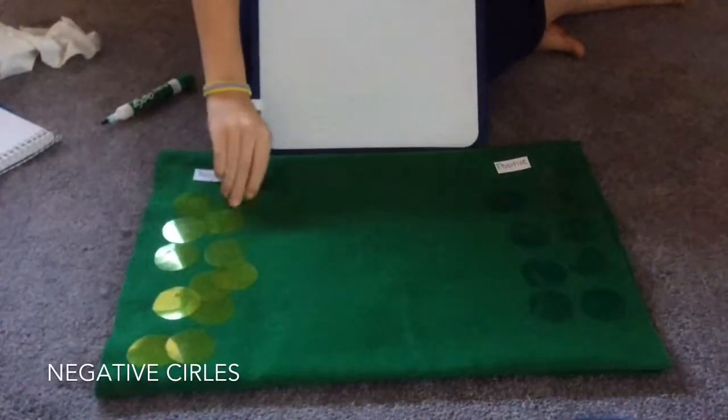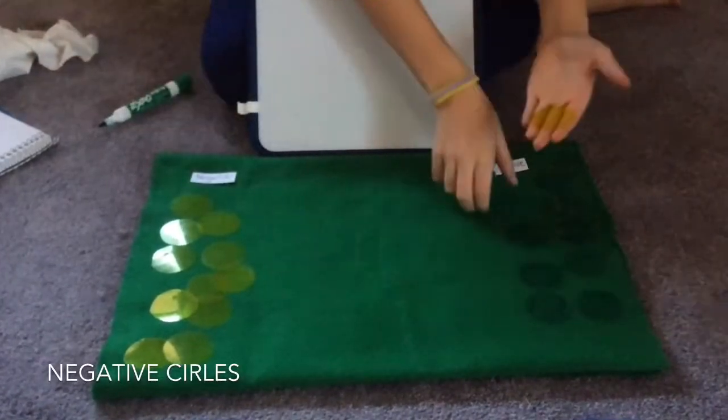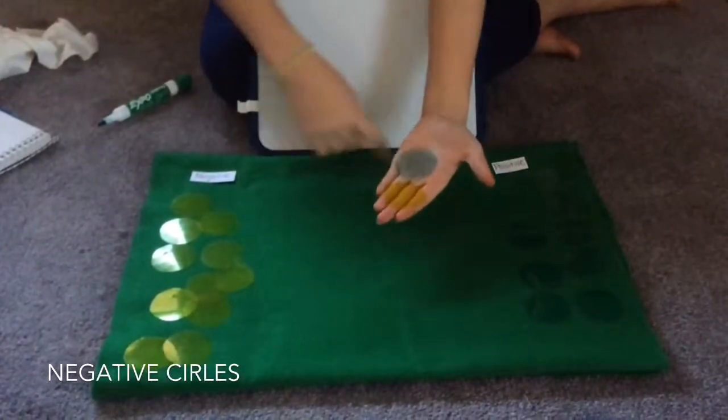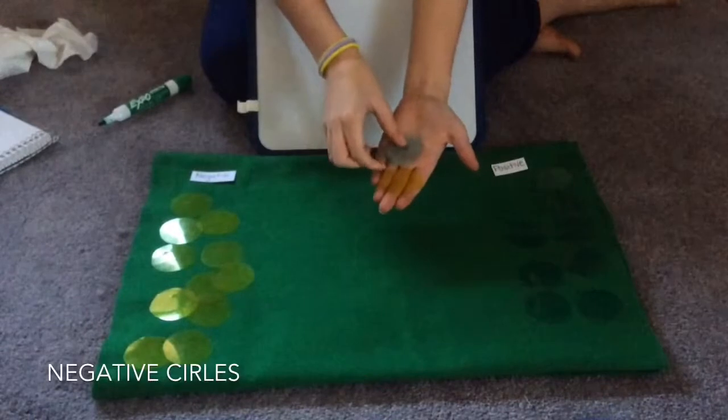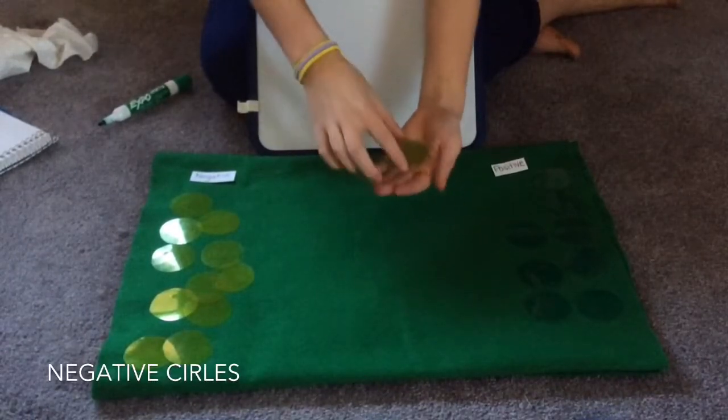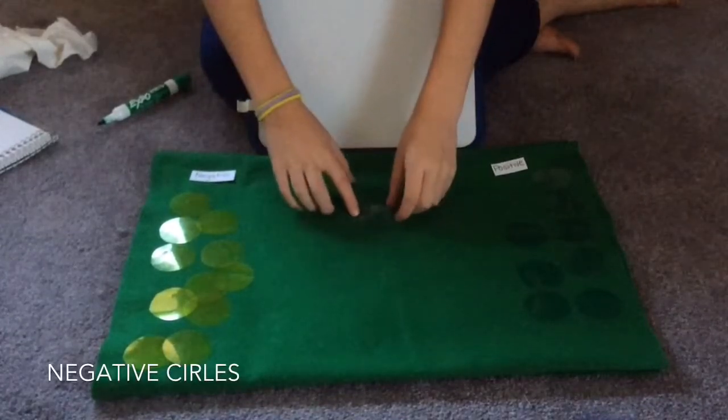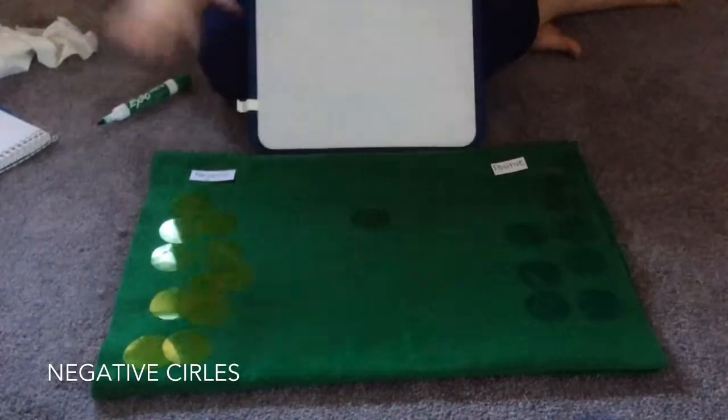Okay, so to start off, I'm going to explain that the yellow circles represent negative numbers and the blue circles represent positive numbers. And when you put yellow and blue together, you get green. And so if you put that down, green on a green background turns invisible.